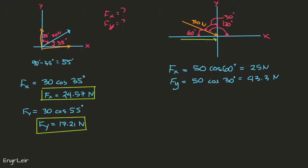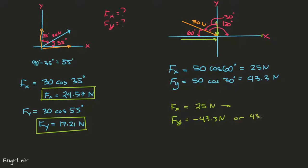The x-component points to the right, which is the positive direction for x, so F sub x is positive 25 newtons. The y-component points downward, so F sub y is negative 43.3 newtons — negative means it's downward, or we can say it's 43.3 newtons pointing downward. These are the final answers for this example.